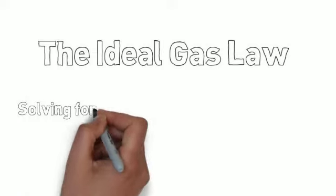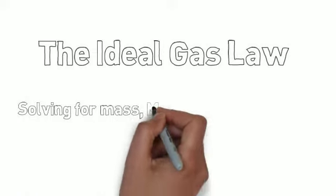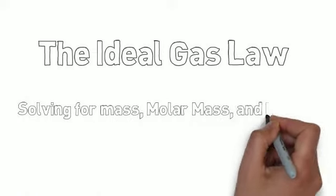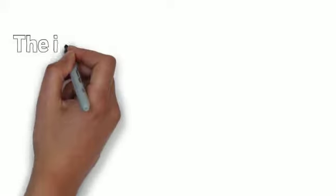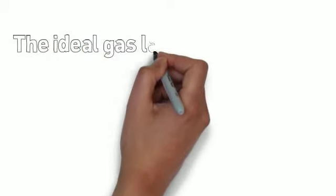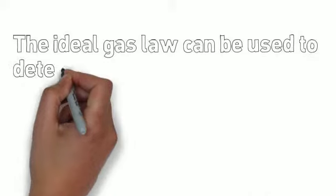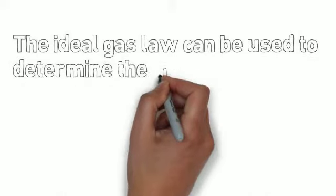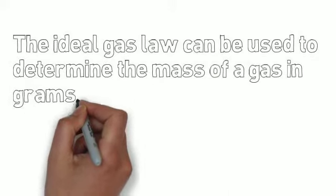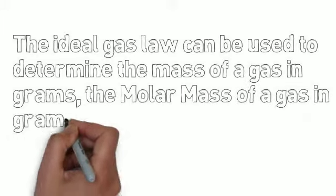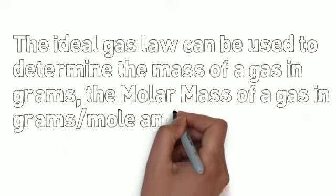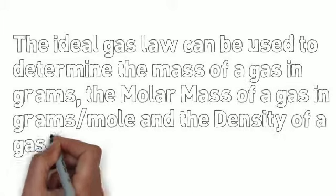This is the ideal gas law solving for mass, molar mass, and density. What we're going to do is rearrange the ideal gas law so that we can solve for these different variables. The ideal gas law can be used to determine the mass of a gas in grams, the molar mass of a gas in grams per mole, and the density of a gas in grams per liter.